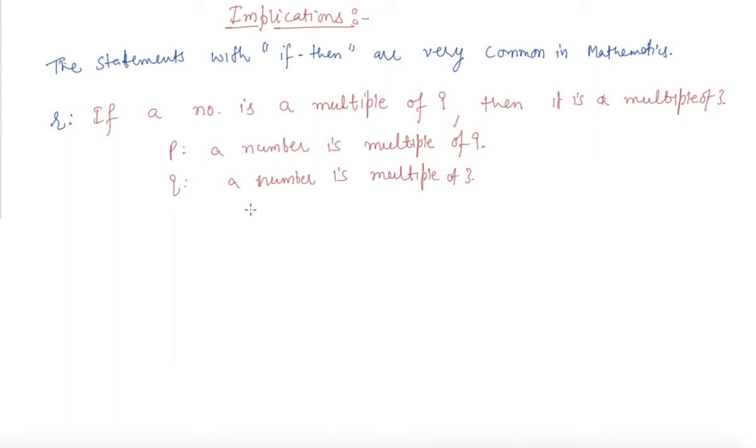I can say that P implies Q and is denoted by P implies Q. The symbol stands for implies - that if the number is a multiple of nine, this implies that it is a multiple of three also.